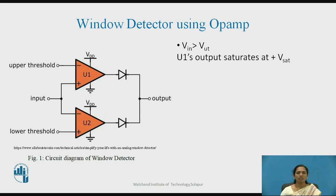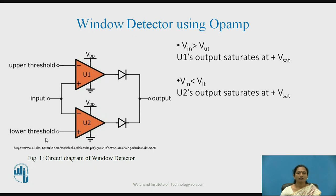When VIN is greater than the upper threshold voltage, the upper threshold is connected to the inverting input of the OPAMP and the input is applied to the non-inverting input. So the OPAMP output saturates to plus V sat and the diode will be conducting when input is greater than the upper threshold voltage.